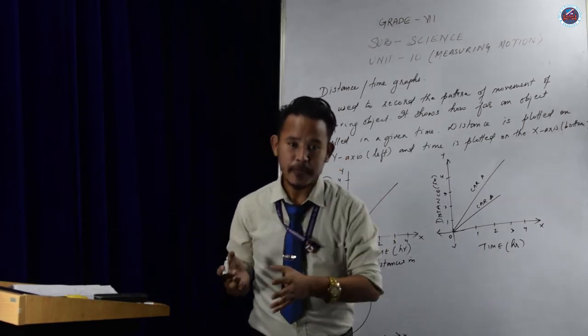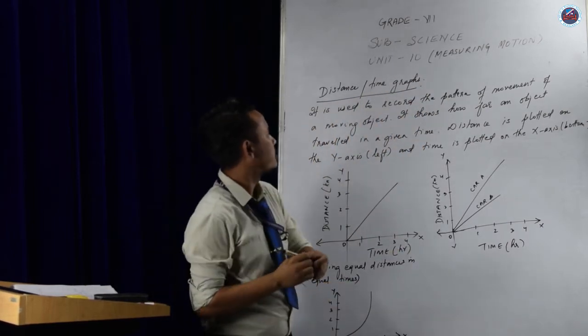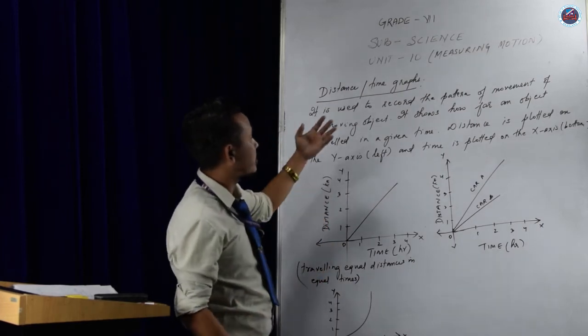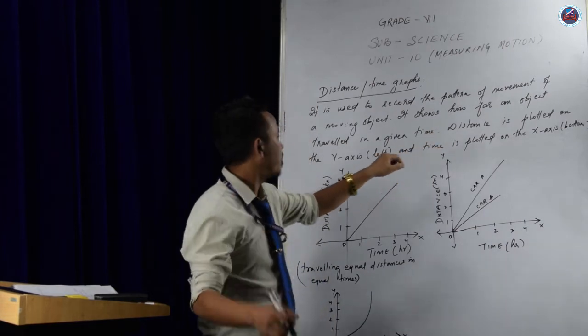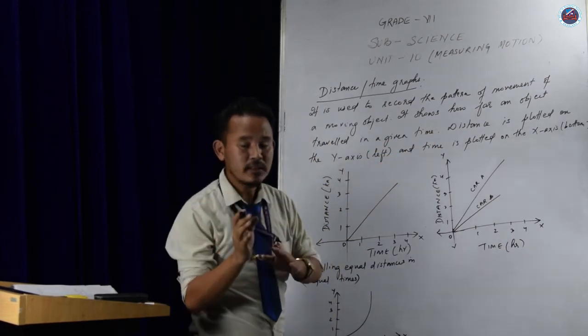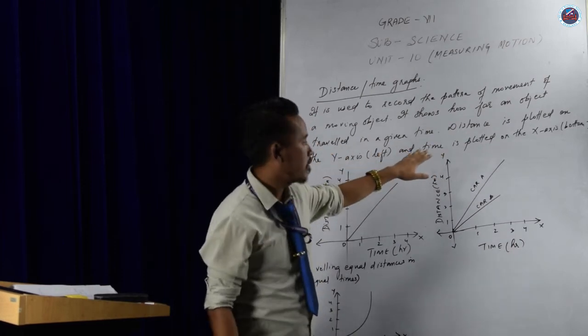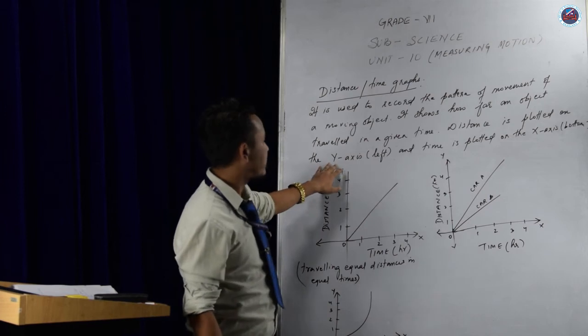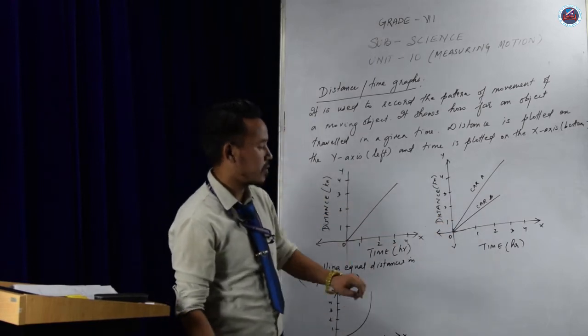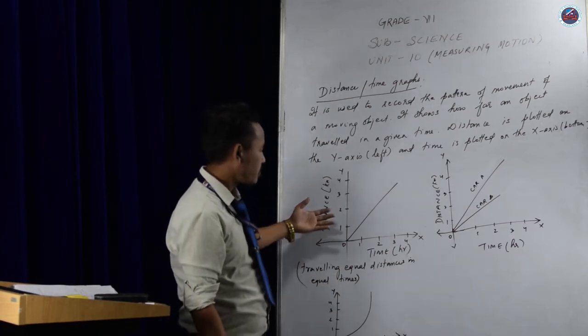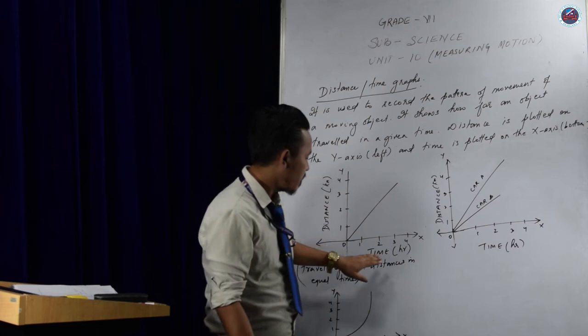That's the constant speed and the changing speed. And as you can see on the board, here I have written here, distance and time graph. So let's try to understand what actually distance and time graph actually means and how it is helpful to us. You can see here as I have written here, it is used to record the pattern of movement of a moving object. Whether it is constant, whether the speed is increasing or whether the speed is decreasing. It shows how far an object travels in a given time. Distance is plotted on the y-axis that is the left and time is plotted on the x-axis that is at the bottom.